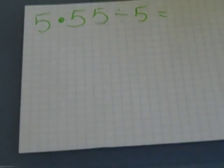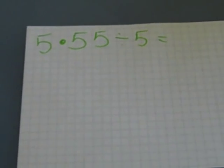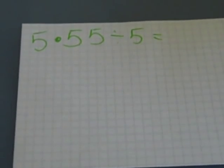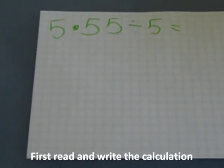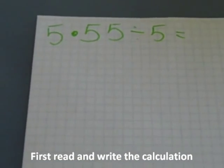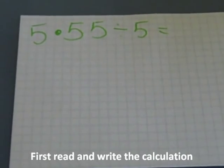Units, point tenths and hundredths divided by units. Number 1: Read the question carefully. For example, 5.55 divided by 5.